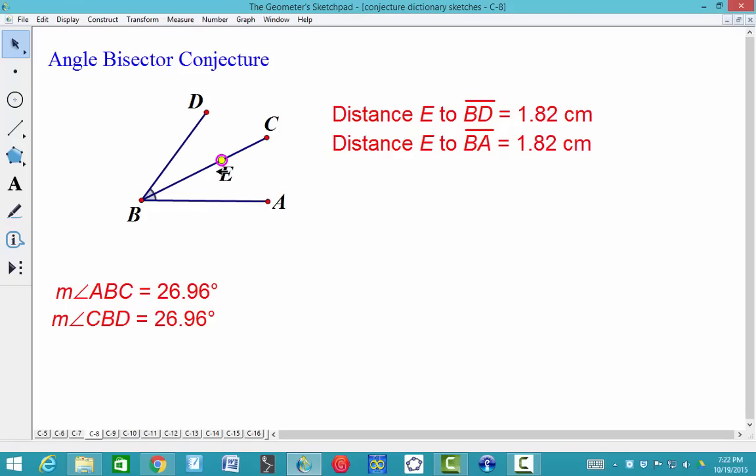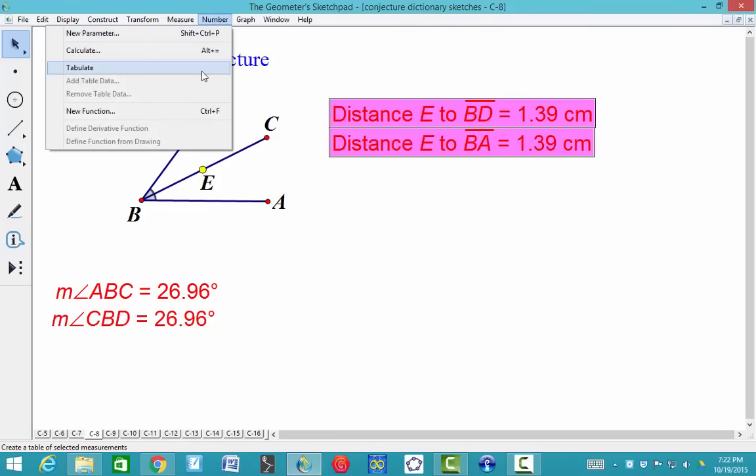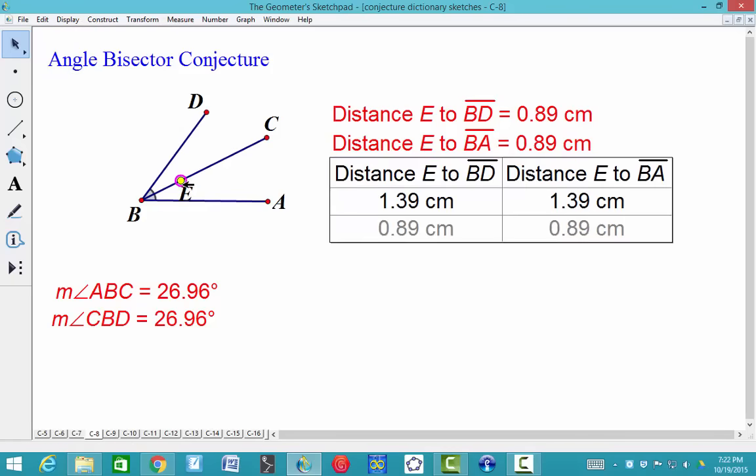So no matter where this lies on the bisector, it's equidistant from the sides. Just to show that this is dynamic, we will highlight both of these, go to number, tabulate, and add a few rows here. So as this moves around, you can see that this will always be equidistant.